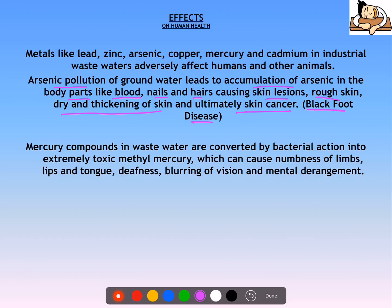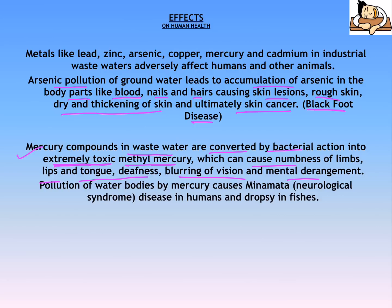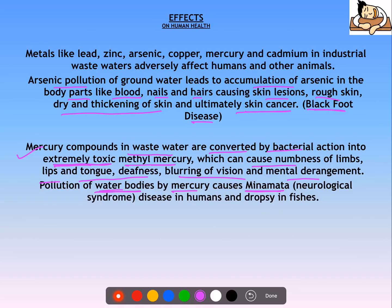Mercury compounds in wastewater are converted by bacterial action into extremely toxic methyl mercury, which can cause numbness of limbs, lips, and tongue, deafness, blurring of vision, and mental derangement. Pollution of water bodies by mercury causes Minamata disease in humans and dropsy in fishes. Minamata is a place in Japan where mercury poisoning occurred, and the Minamata Convention is also named after this place.